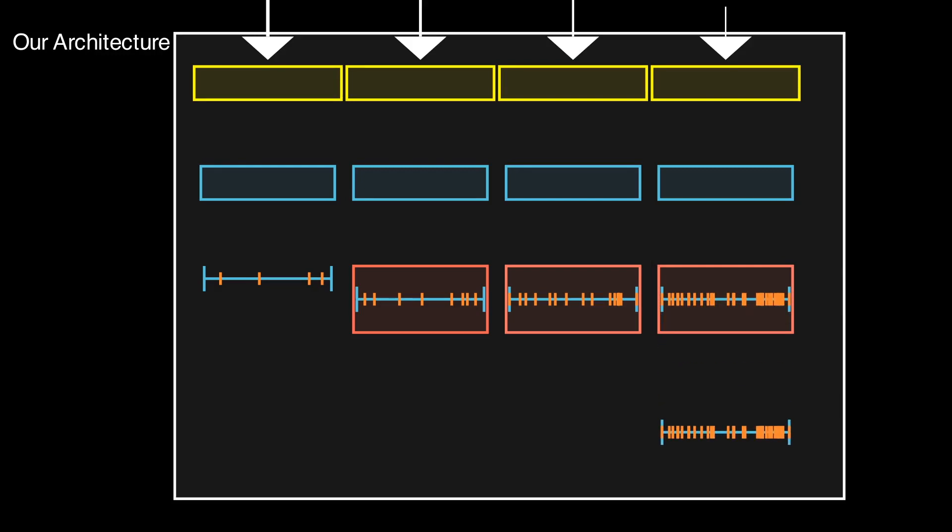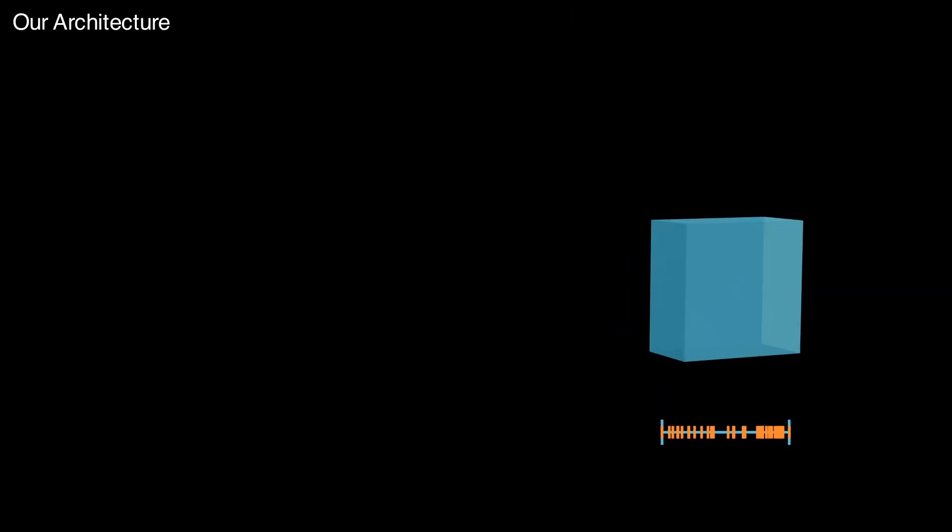Finally, the predicted depth at a pixel is computed by taking a linear combination of the probabilities at that pixel and the bin centers from the final layer.